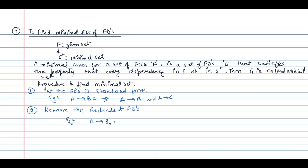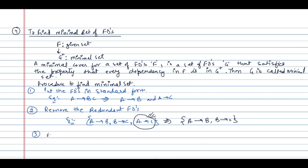Step two: remove the redundant functional dependencies. For example, if you have A determines B, B determines C, and A determines C — A determines C is redundant because by transitivity we already know that A can determine C through B, so we can remove it.